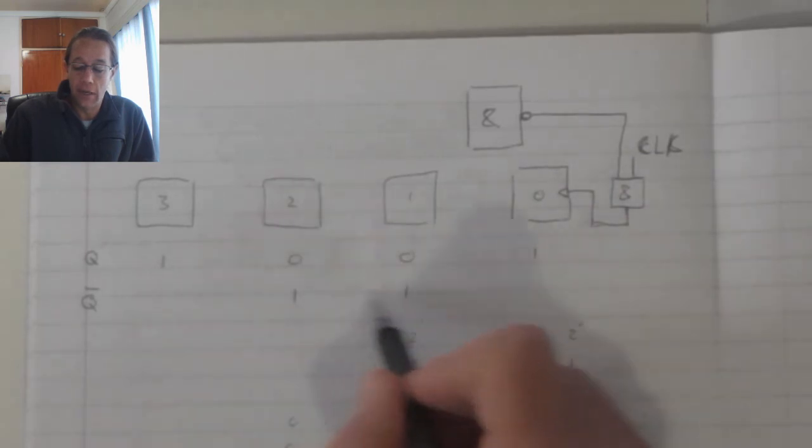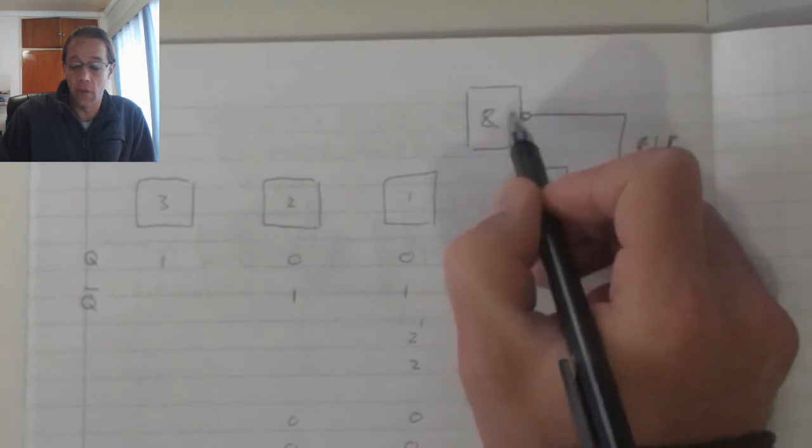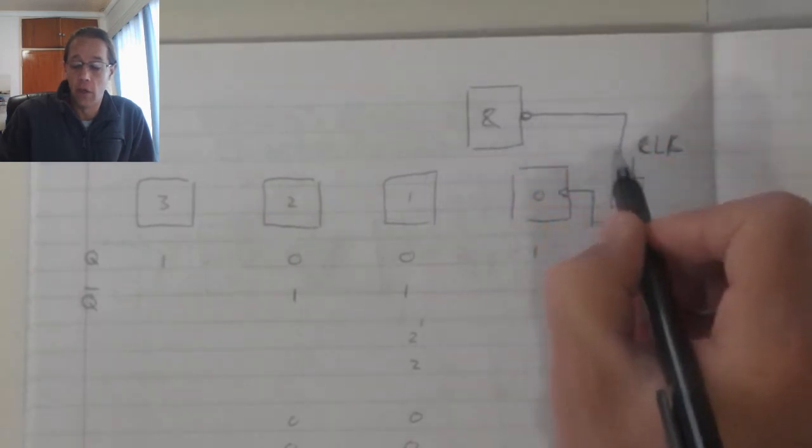That will give us 4 ones on this NAND, which gives us a logic 1, which is inverted to a logic 0, which in turn will disable the clock input from continuing.